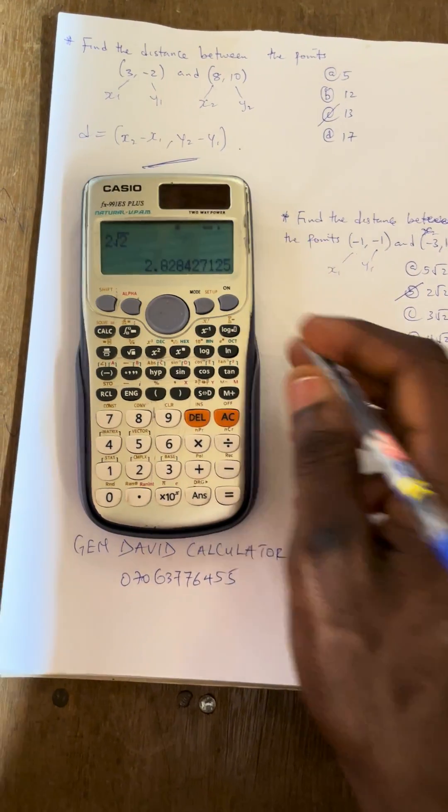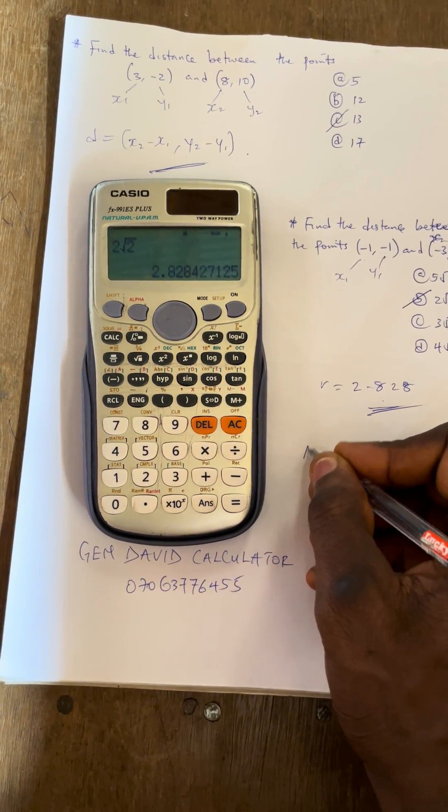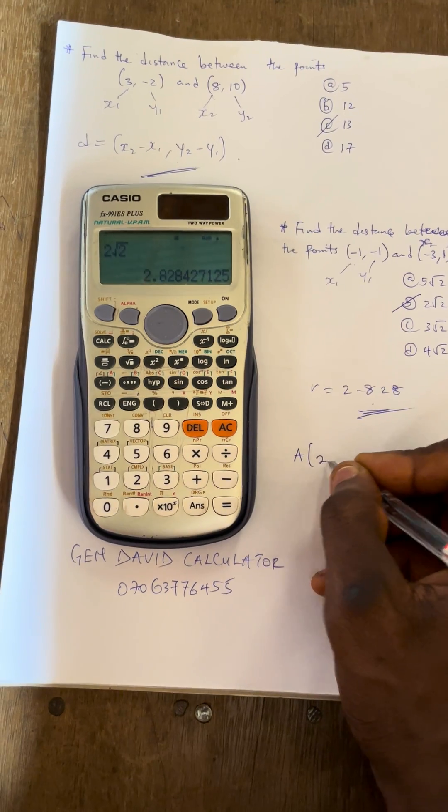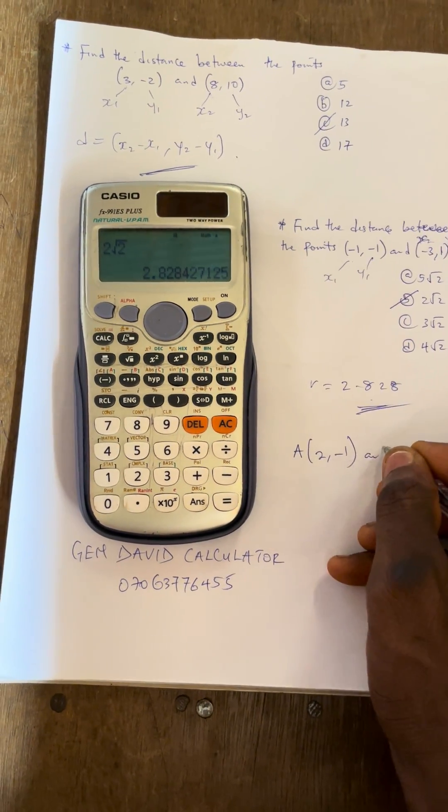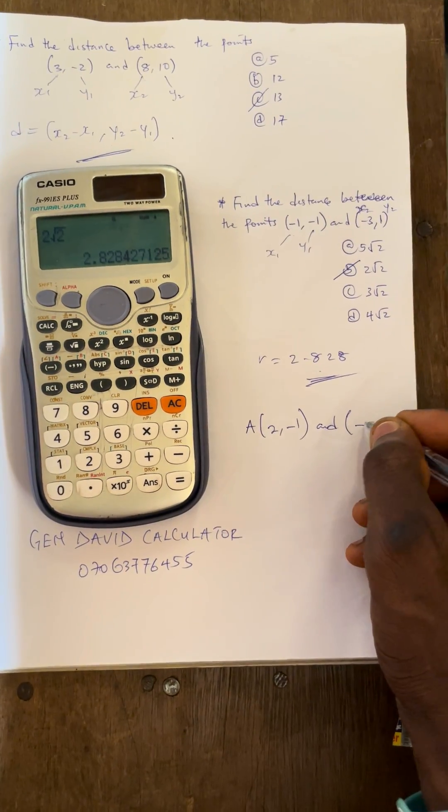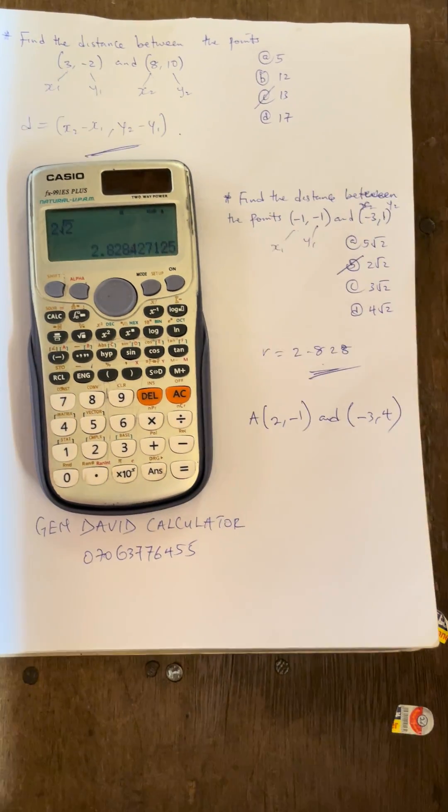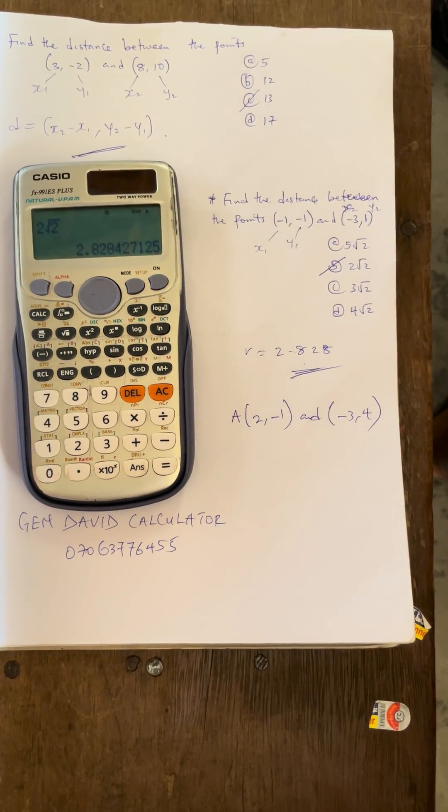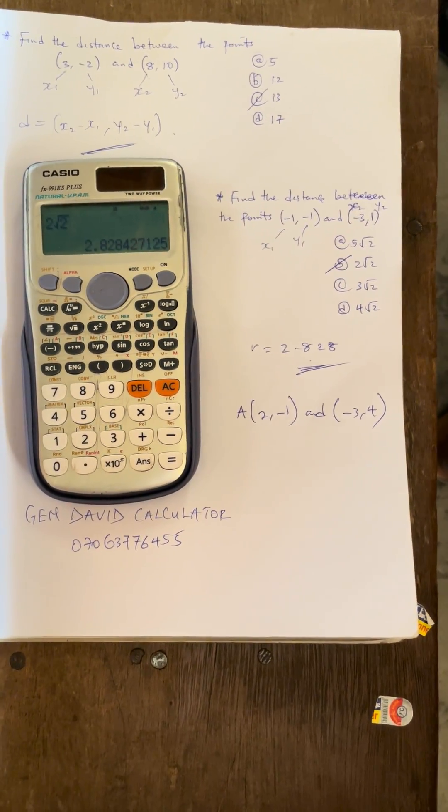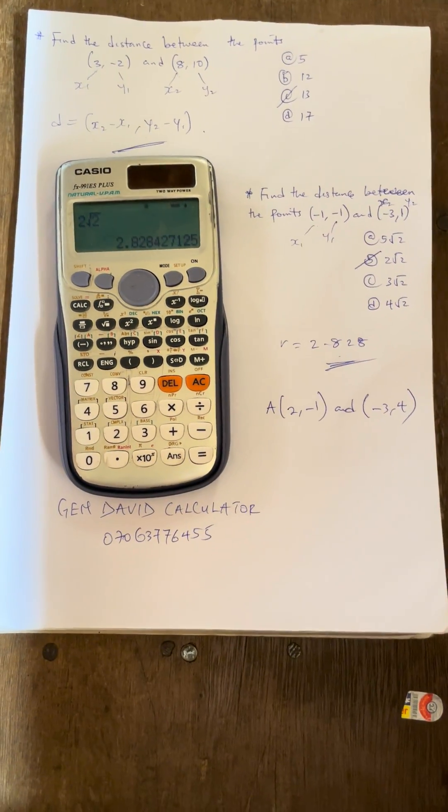In the comment section, find the distance between this point A, which is (2, -1), and you have (-3, 4). 2, minus 1, and minus 3, 4. Let me know the answer at the comment section.